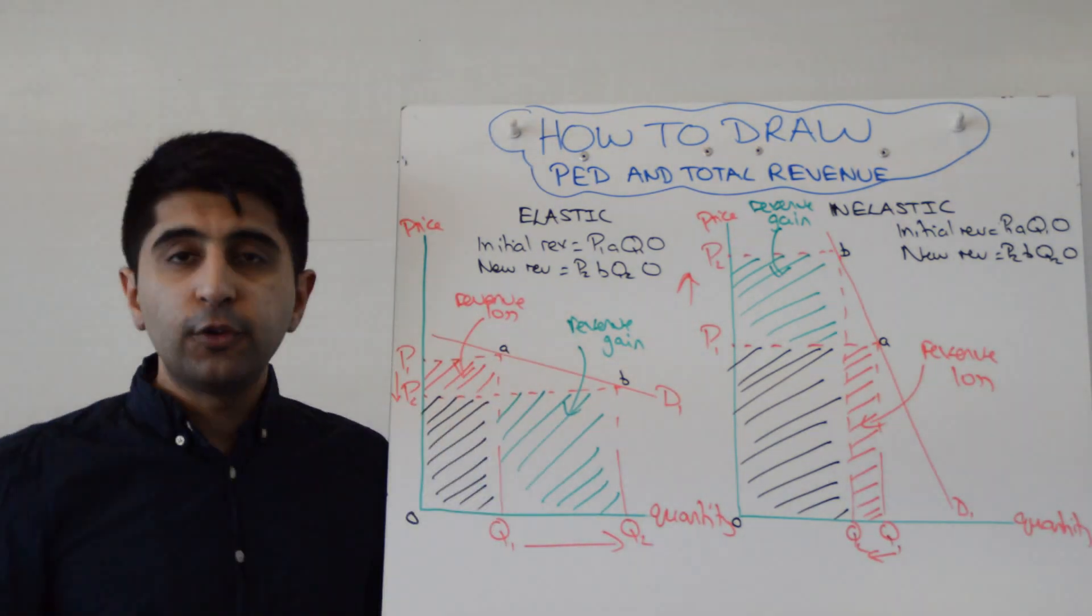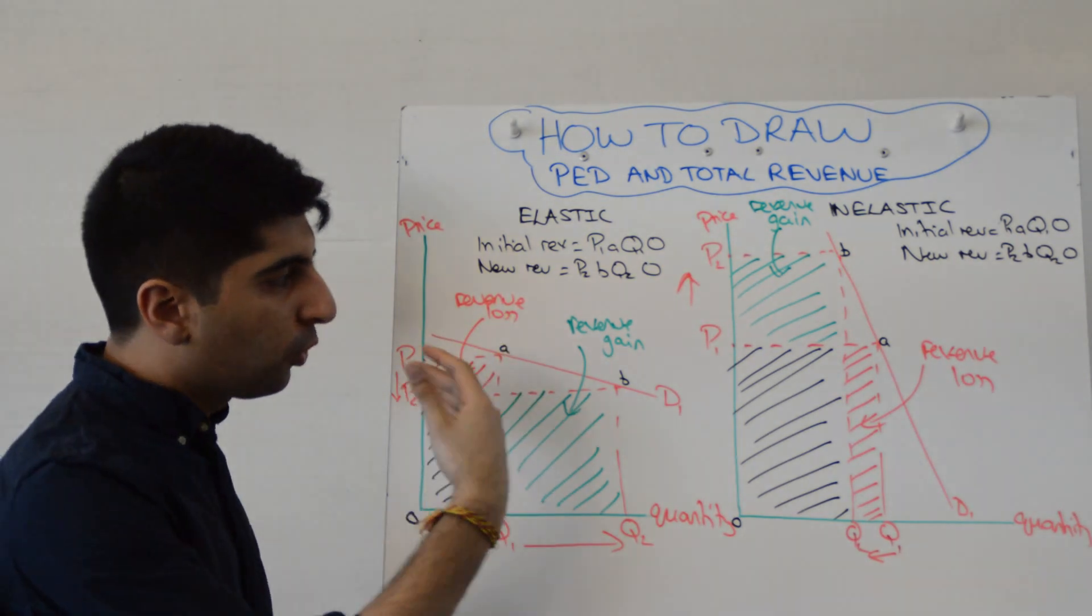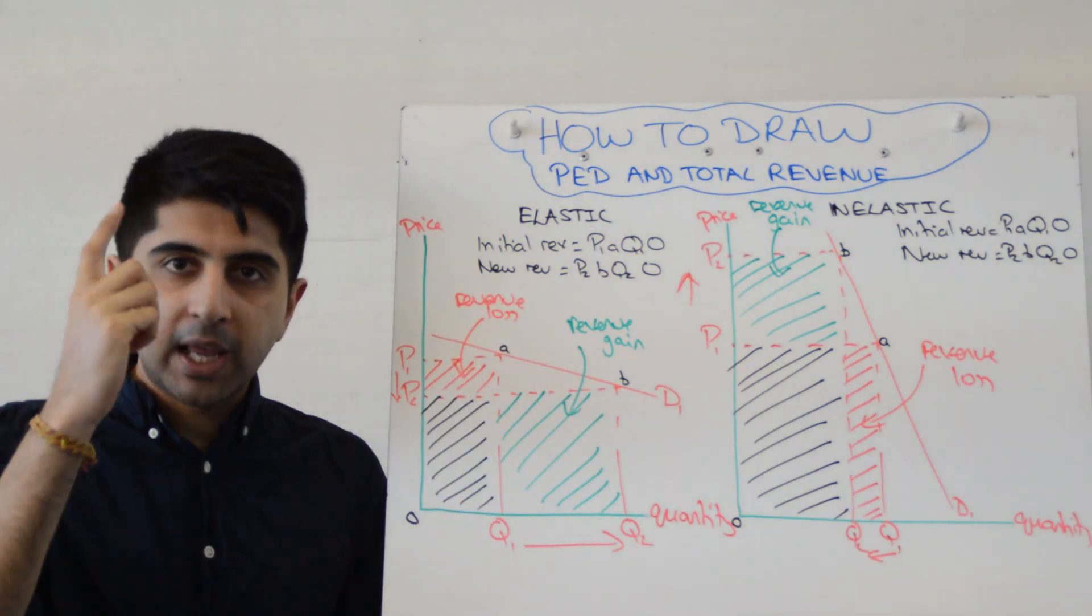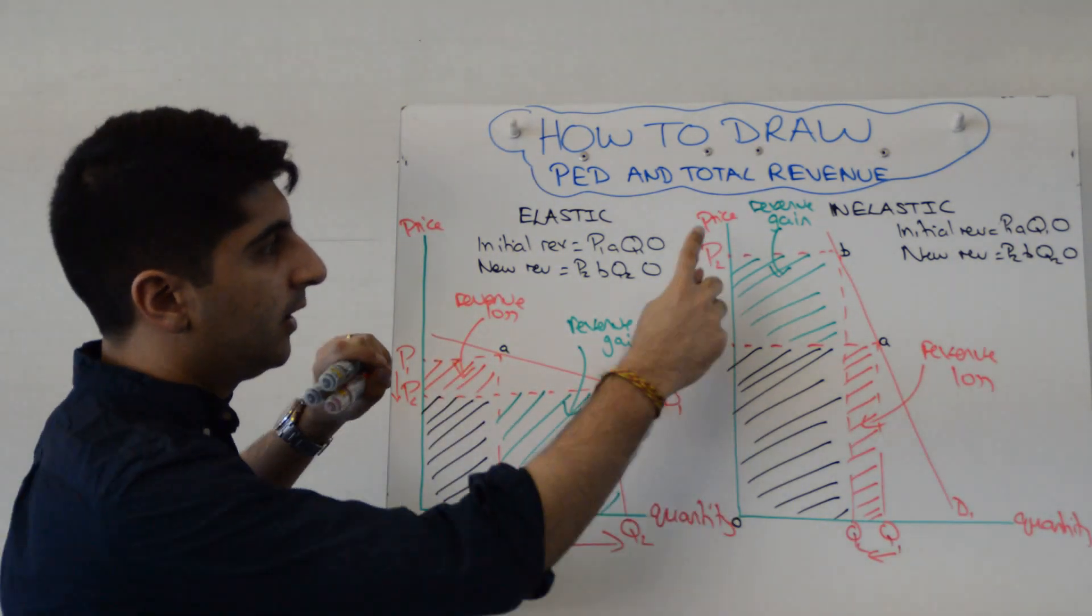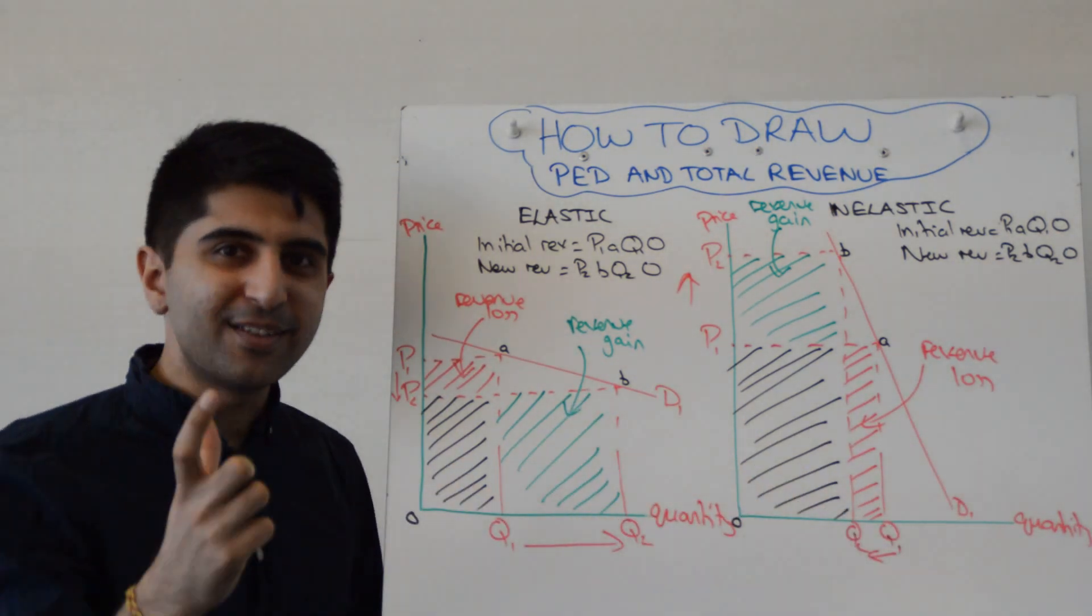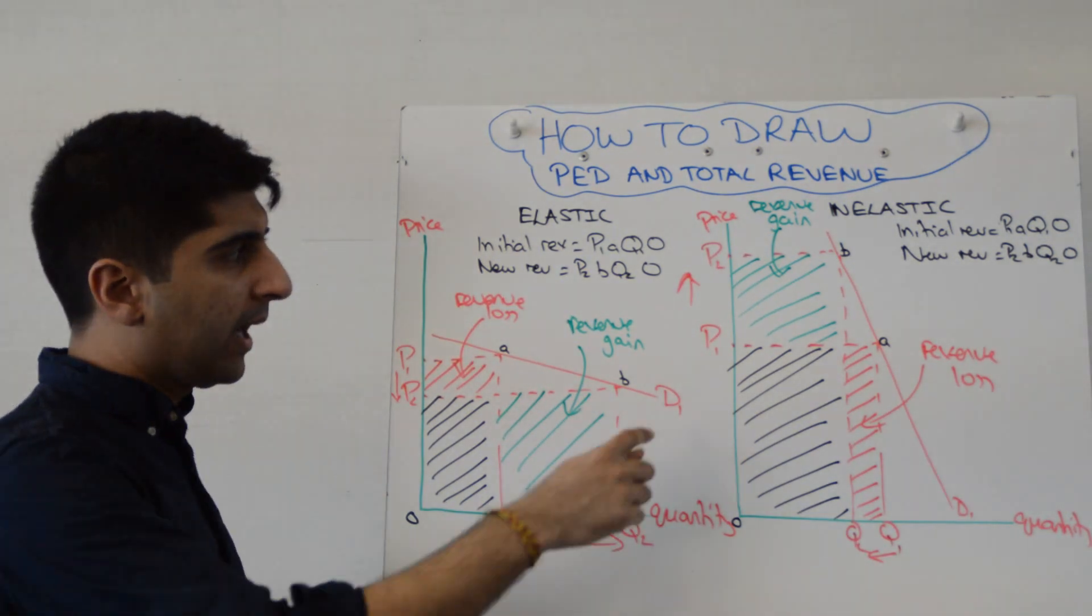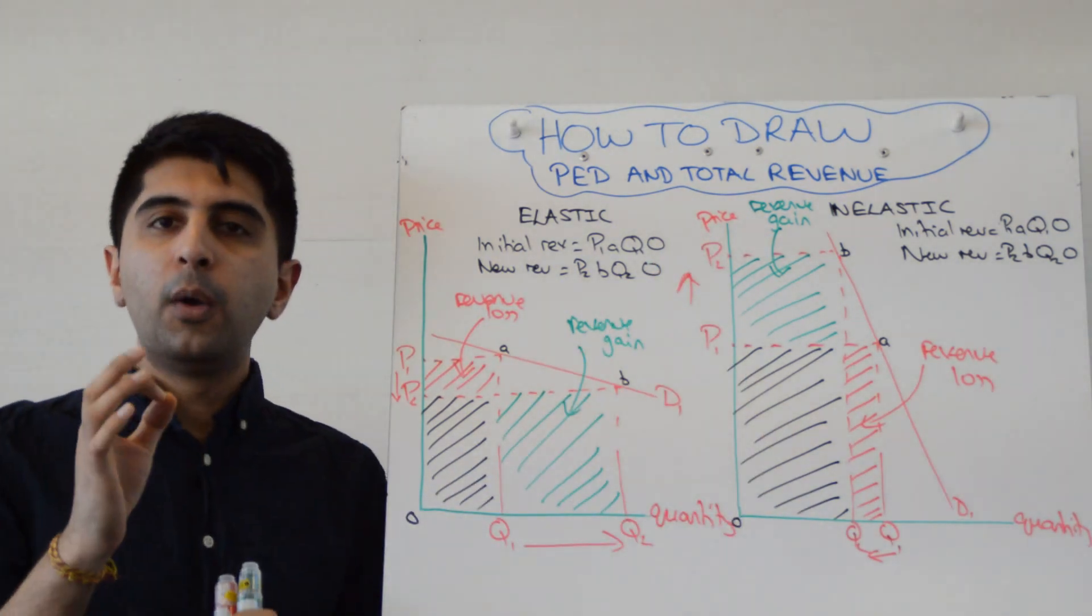So this is how you do it, guys. The link between price elasticity of demand and total revenue drawn diagrammatically. Remember your checklist. Have we labelled our axis? Yes, we have, beautifully. Have we labelled our curves? Yes, we have. Easy to forget that. We haven't done. Have we labelled our equilibrium? We don't have any equilibria, but we have got prices and quantities to label. We've done that very clearly.